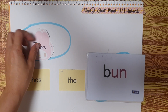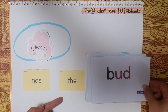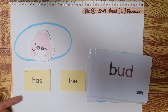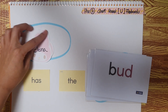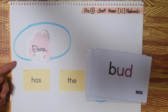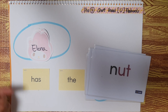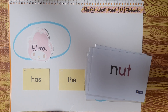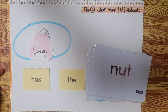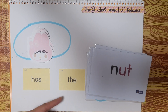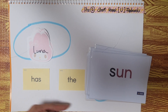Jenna has the bud. Jenna has the bud. Elena has the nut. Elena has the nut. Luna has the sun. Luna has the sun.